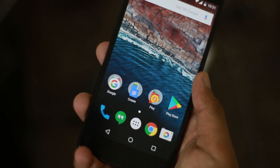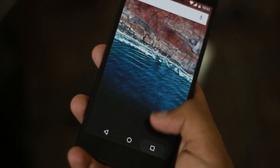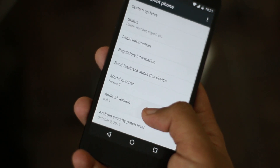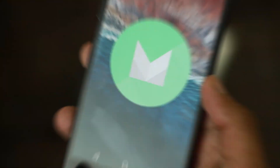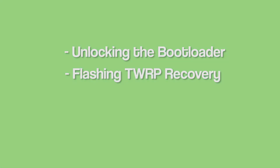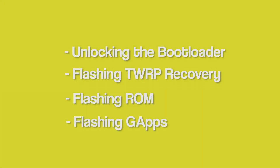For the purpose of this video, I'm using a Nexus 5 with stock Marshmallow 6.0.1 with the locked bootloader. The entire process is divided into four main steps: first is unlocking the bootloader, second is installing TWRP recovery, third is flashing the ROM, and fourth is flashing the Gapps or Google apps — without which the phone is basically useless.